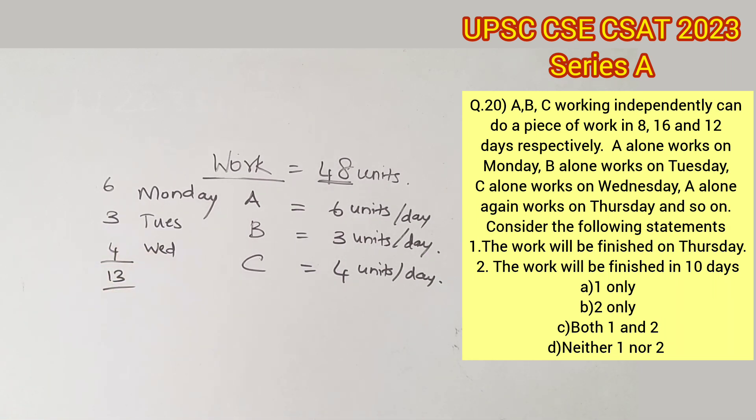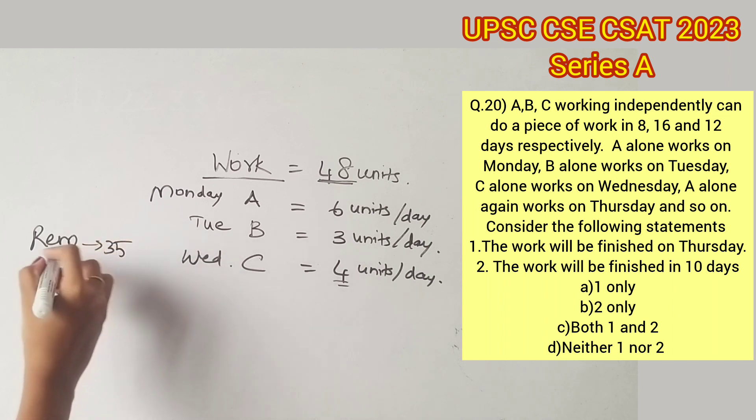This process will keep repeating until all the 48 units are completed. The remaining units of work is 48 minus 13, that is 35. Continuing with the process, on Thursday A would complete 6 units of work. Now the remaining units is 29.